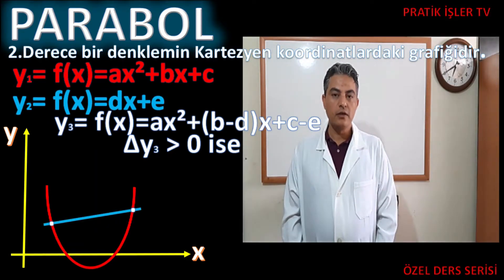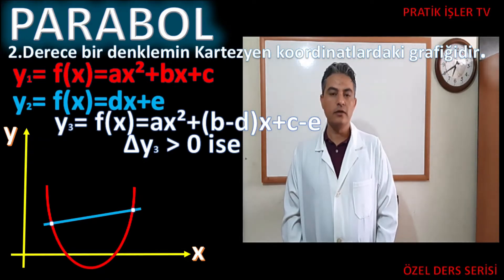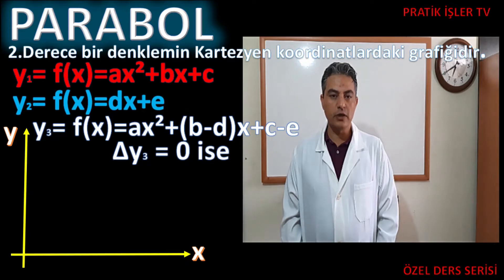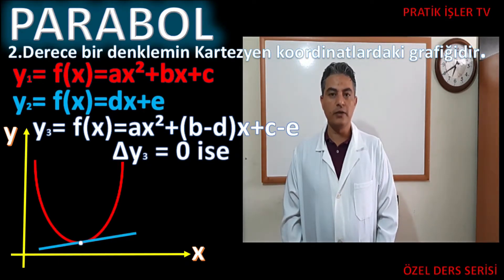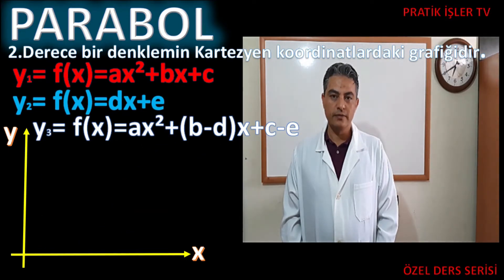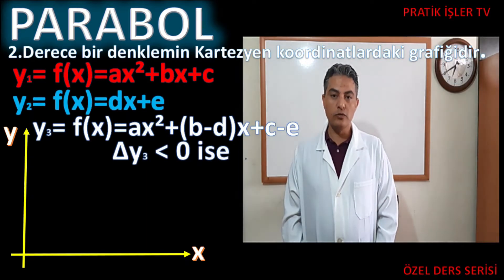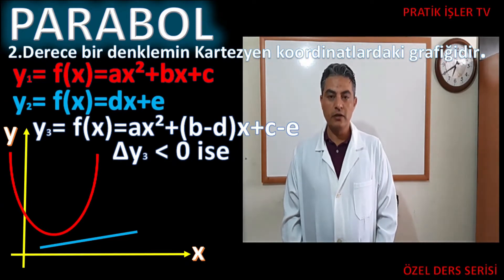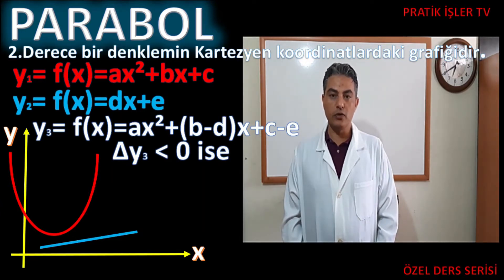Ya da sorularda doğru parabolu iki noktada kesiyorsa ifadesi olarak görürsünüz. Y3 fonksiyonunda eğer delta sıfır eşit çıkıyorsa o zaman doğru parabole bir noktada teğet demektir. Yine bunu sorularınızda doğru parabole teğet ise ifadesiyle görürsünüz. Delta'yı sıfıra eşitleyip soruyu ona göre çözeriz. Üçüncü durum delta'nın sıfırdan küçük olma durumu ki elde ettiğimiz bu y3 parabol fonksiyonunda parabol ile doğru birbirini kesmezler arkadaşlar. Sorularınızda doğru parabolu kesmiyorsa gibi bir ifade varsa o zaman o soruyu delta sıfırdan küçük olarak düşünüp çözeceğiz.